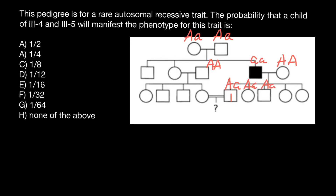All children of this couple are going to be heterozygous. Now let's find the probability for this person, III-5, to be heterozygous. We know that her father is homozygous normal dominant (AA). What about her mother? We know her phenotype is normal, but what is her probability of being heterozygous? Take a look.